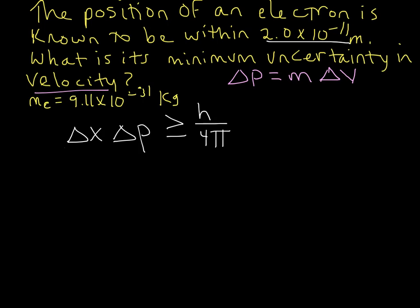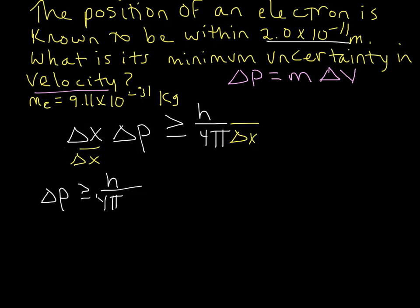Let's rearrange the equation to solve for the uncertainty in momentum, since that's where we're going. We divide both sides by uncertainty in X, and we end up with: uncertainty in momentum is greater than or equal to h divided by 4π times the uncertainty in X.